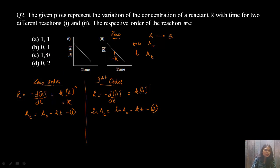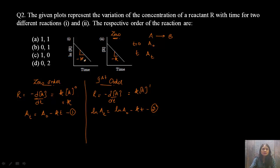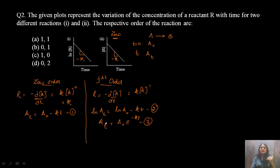For the first order graph, ln[Aₜ] vs t is also a straight line with negative slope −K, meaning ln of concentration decreases linearly with time. Equation 2 can also be written as Aₜ = A₀·e^(−Kt), which tells us that for a first order reaction the concentration of the reactant decreases exponentially with time.